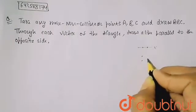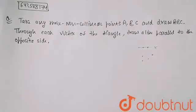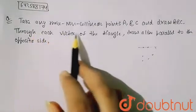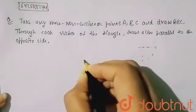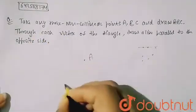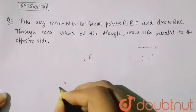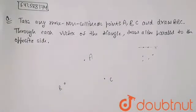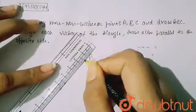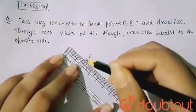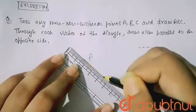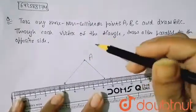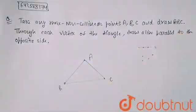These are non-collinear points lying randomly. So I am taking point A here, point B here, and point C on this side. Now I have to join A, B, C — so AB is joined, AC is joined, and BC is joined. This is my triangle ABC.